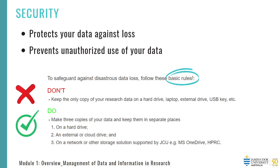Having safe and secure storage and backup arrangements helps protect your data. For active data — also known as working data — we recommend you follow the basic rules. Do not keep the only copy of your research data on a hard drive, laptop, external drive, or USB key. What we strongly urge you to do is make three copies of your data and keep them in separate places: one on a hard drive, two on an external or cloud drive, and three on a network or other storage solution supported by JCU — for example, Microsoft OneDrive or the HPRC.